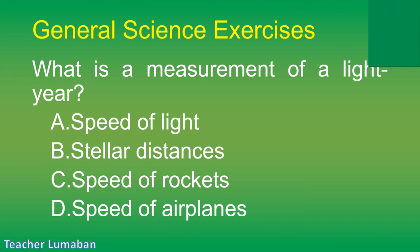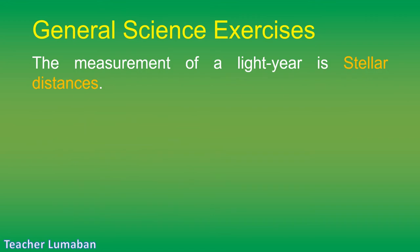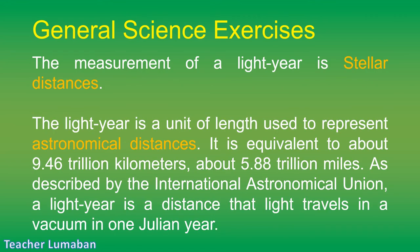The correct answer is Letter B: stellar distances. The measurement of a light year is stellar distances. The light year is a unit of length used to represent astronomical distances. It is equivalent to about 9.46 trillion kilometers, or about 5.88 trillion miles. As described by the International Astronomical Union, a light year is the distance that light travels in a vacuum in one Julian year.